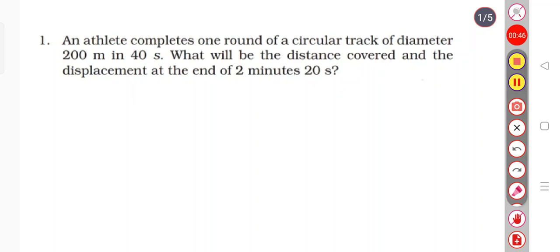So now let's do our question, which says: an athlete completes one round of a circular track of diameter 200 meters in 40 seconds. What will be the distance covered and the displacement at the end of 2 minutes and 20 seconds?